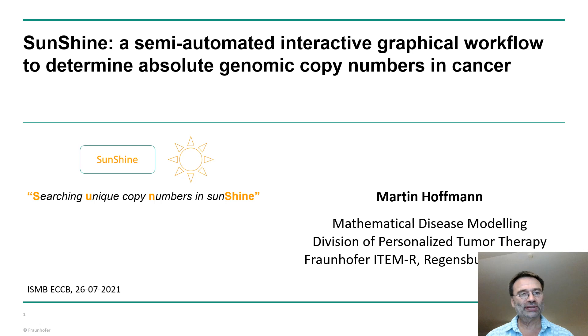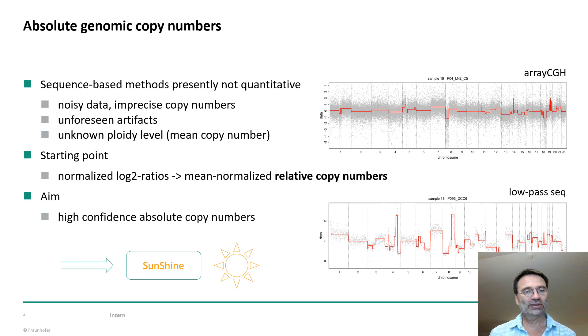Hello, my name is Martin Hoffmann and I'm presenting the poster Sunshine, a semi-automated interactive graphical workflow to determine absolute genomic copy numbers in cancer. Sunshine has an interpretation meaning searching unique copy numbers in sunshine.